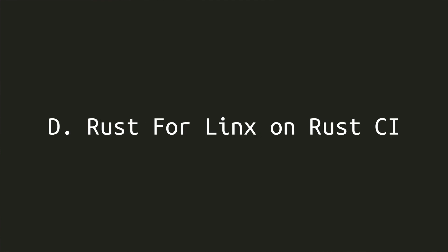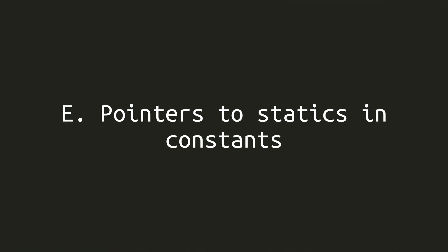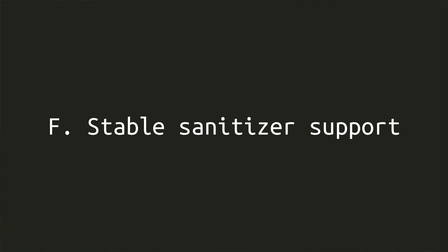Part D is a project to set up dedicated Rust for Linux tests in the official Rust CI suite, committing to ensuring changes to Rust do not break Rust for Linux. Part E is to help with the need to use pointers to statics in constants — the way Rust for Linux creates vtables in read-only memory. Parts A through E are the regular goals for the project. The final parts F through I are stretch goals that have not yet found an owner.